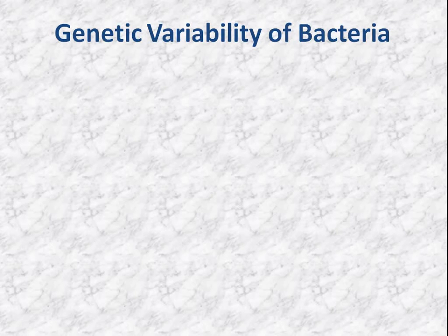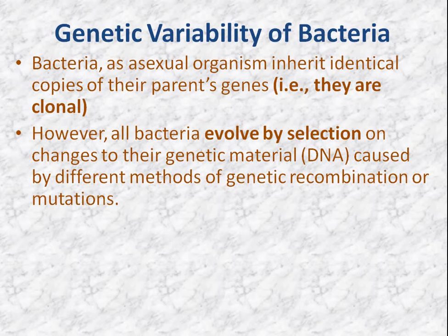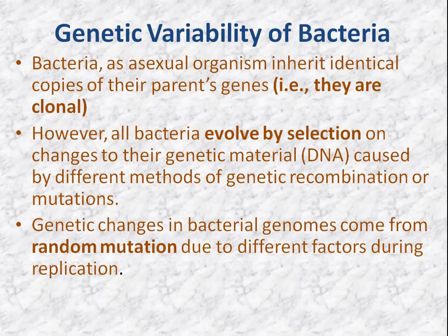Now the genetic variability of bacteria. As asexual organisms, bacteria mostly reproduce asexually and inherit identical copies of DNA from their parents — so they are called clones. However, some bacteria evolve by selection due to changes in genetic material, through different methods of genetic recombination or mutation. Genetic changes in bacterial DNA may occur due to random mutation during replication or cell division.